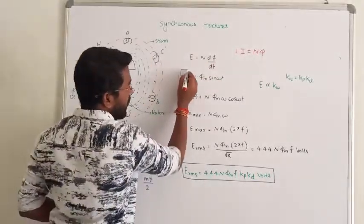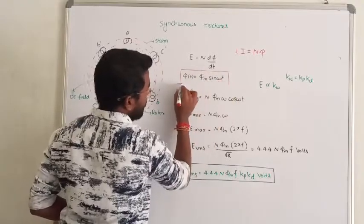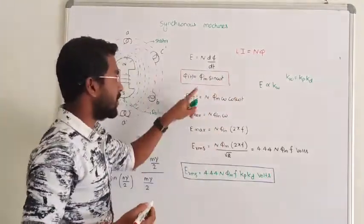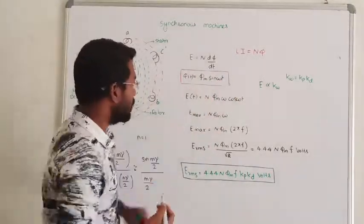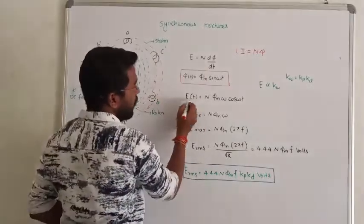The flux keeps varying - that's called instantaneous flux in AC machines. That can be written as phi_m sin omega t.